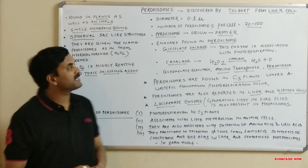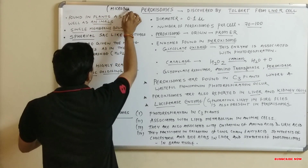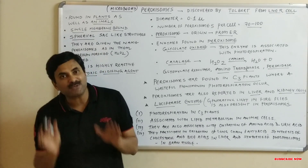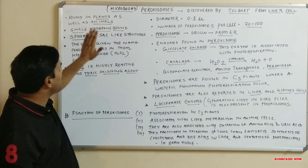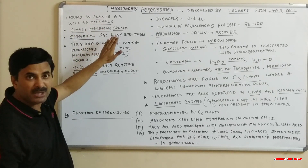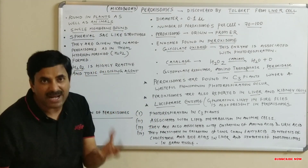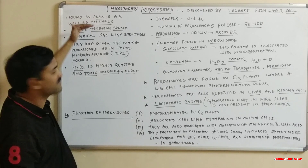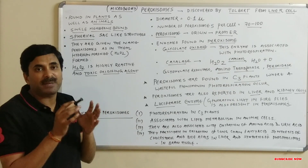Today we will discuss peroxisomes. Peroxisomes are microbodies found in cells — they are called microbodies because they are very small. These microbodies were first discovered by a scientist known as Tollbert in liver cells. Though they were discovered from liver cells, they are also found in plants. So we can say that peroxisomes are found in both plants and animals. In plants they are found in green cells, and in animals they are particularly found in the liver and kidney cells.